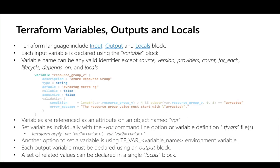There are two options to provide input for variables. One is at the time of Terraform apply, passing the variable name equal to the variable value. Alternatively, you can define these as environment variables using TF_VAR_ followed by the variable name and value. Then you have the output block — I'll share examples during the demo — and finally the locals block. To simplify infrastructure as code, Terraform supports the concept of modules.